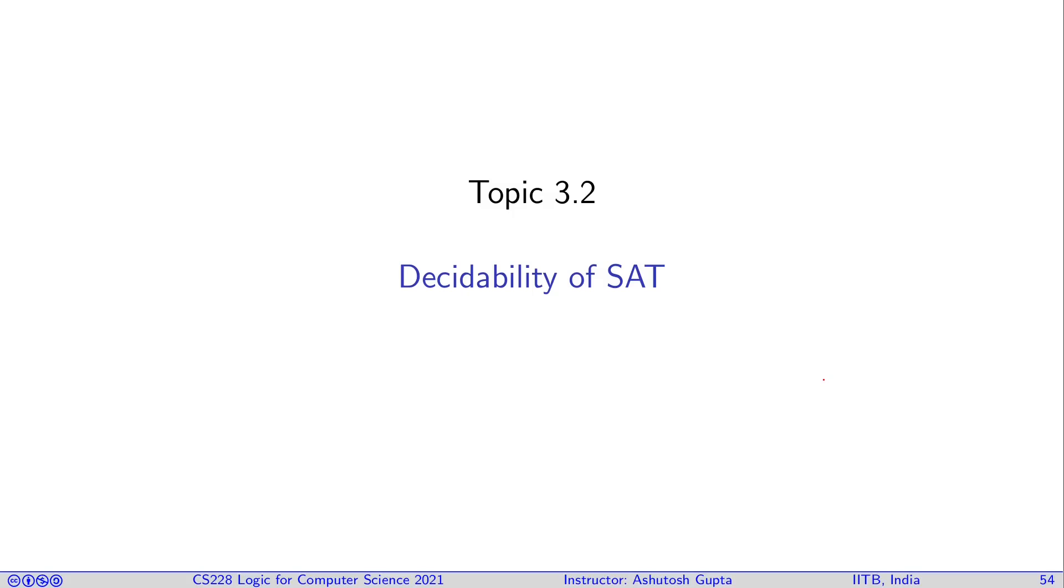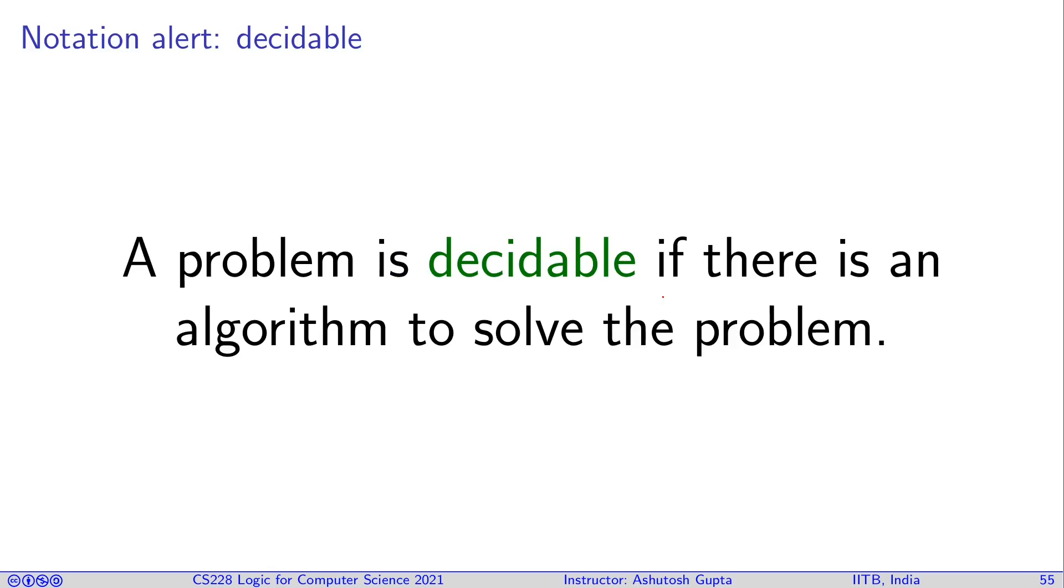Now we are going to look at the decidability of the SAT problem. Before that, let's try to understand the word decidable. A problem is called decidable if there is an algorithm to solve the problem, and there are problems where there is no algorithm. Therefore, it is a relevant definition: if I give you a problem, is it decidable or not?